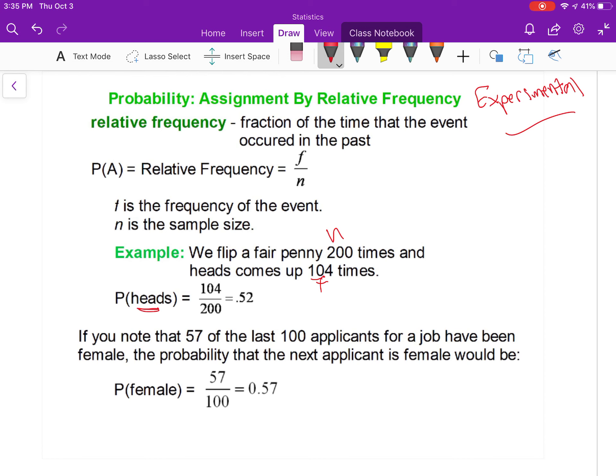Note that 57 out of the last 100 applicants has been female. The probability the next applicant being female would be 57 out of 100, so N is 100. If I'm looking for female, then my frequency would be 57.